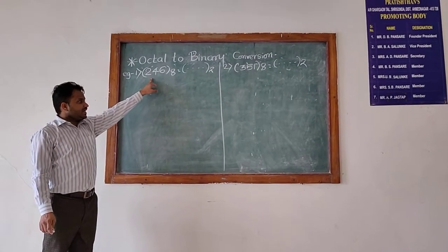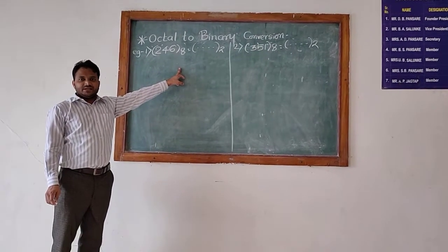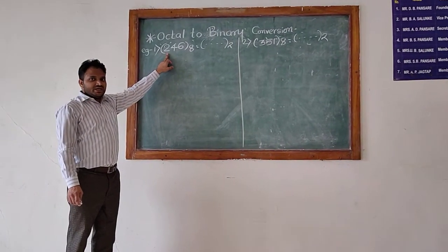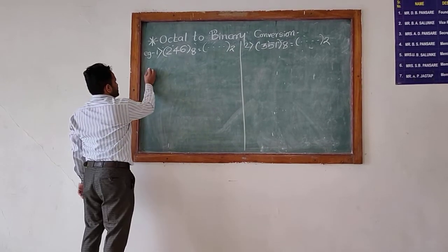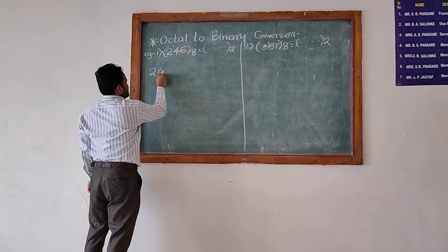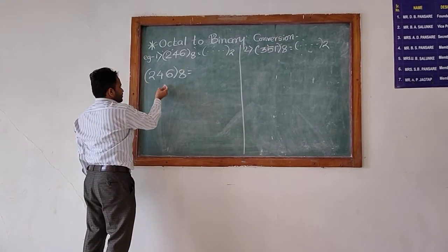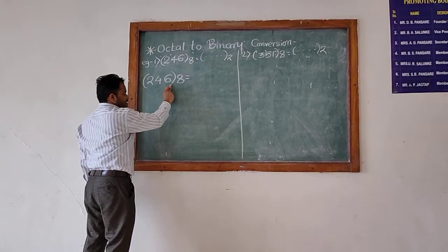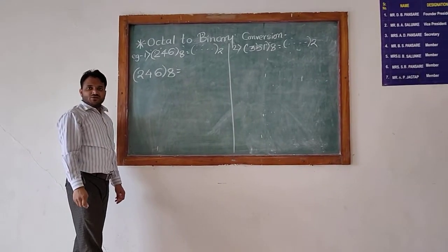If the number given is octal and you have to convert it into the equivalent binary, then we have to write down the binary equivalent of these numbers. So first step is to write the number which is given, that is 2468. Now in the next step, I will write the binary equivalent of this number in the straight form.